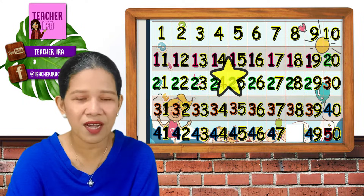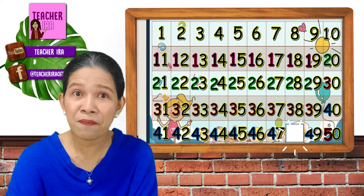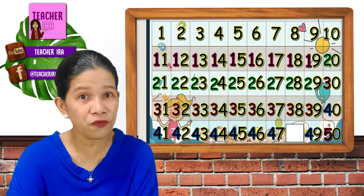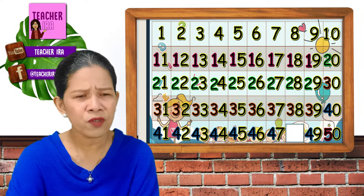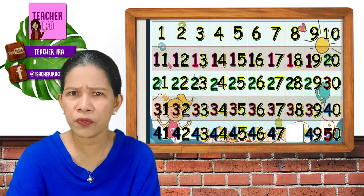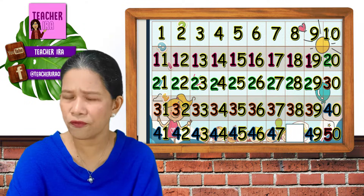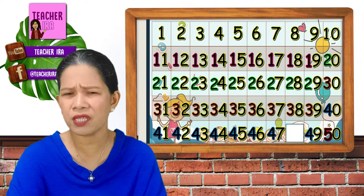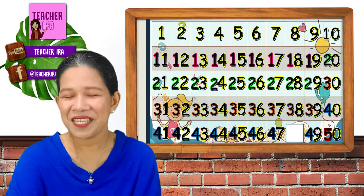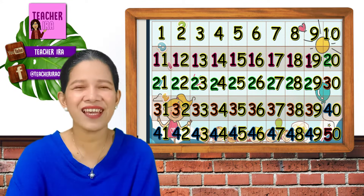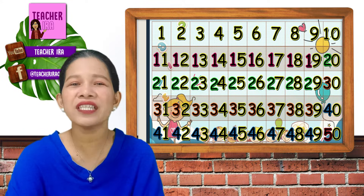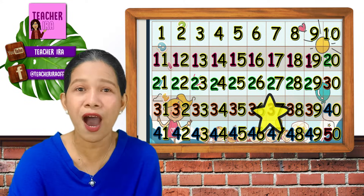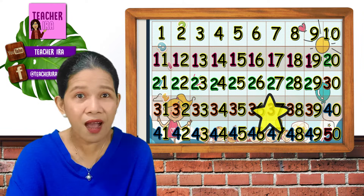Last one. What could be the missing one here from 41 to 50? 4 and 1, 4 and 2, 4 and 3, 4 and 4, 4 and 5, 4 and 6, 4 and 7. Yes, it's 48. Woohoo! One more star.